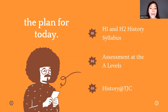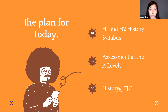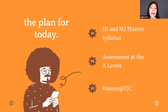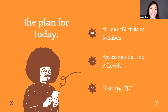The plan for today is threefold. I'll be talking first about the syllabus of A-level history — the different focus specifically between H1 and H2. We will then talk about how history is assessed at the A-levels, and finally about what studying history at TJC is like. Please feel free to ask your questions at the end of the sharing, submit them to our Padlet, or join our Zoom call to talk to us further.